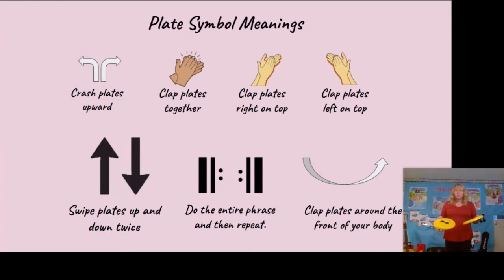These are the different symbols you're going to be learning about. When you see the first two arrows coming up and out, you're going to crash your plates coming up like this. Practice that with me - up and out. Good job. The second one is simply clapping your plates together. That might be on the left side of your body or the right side, so be careful and look to see which side you're supposed to be doing that on.